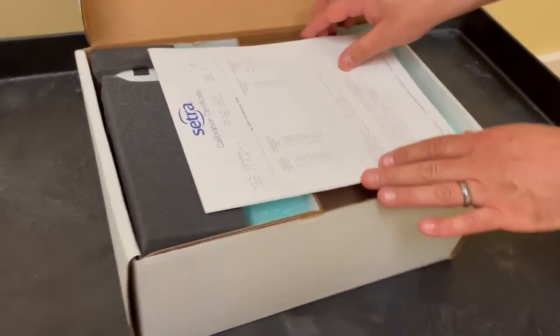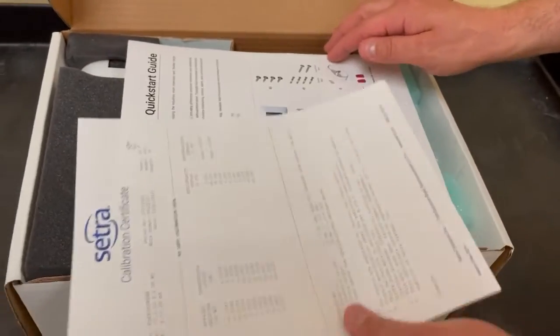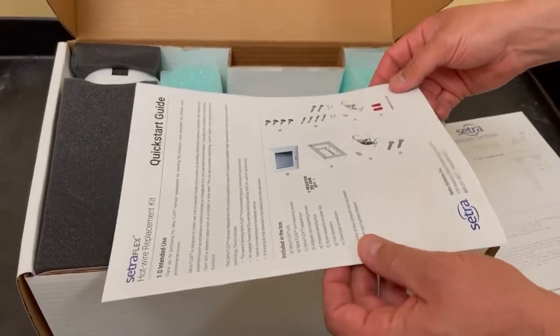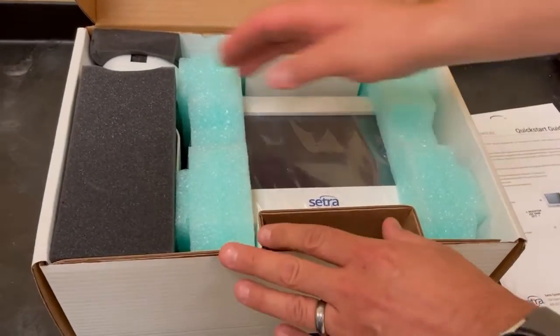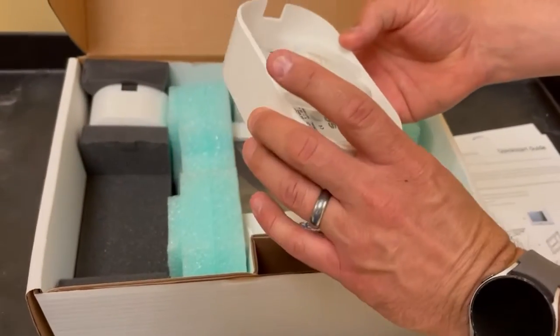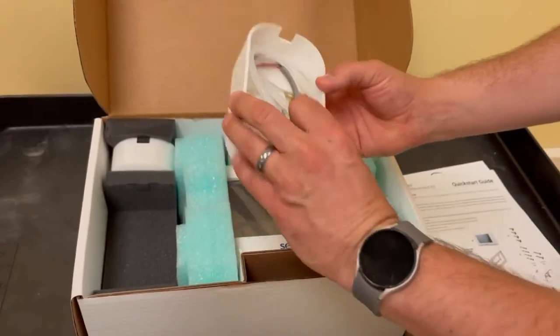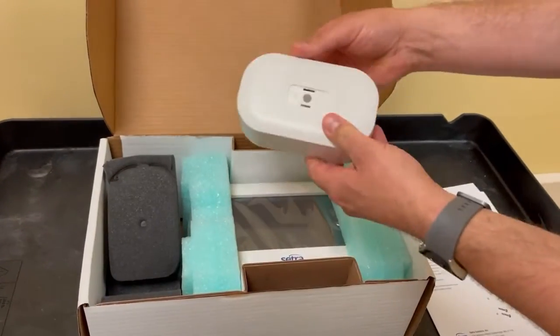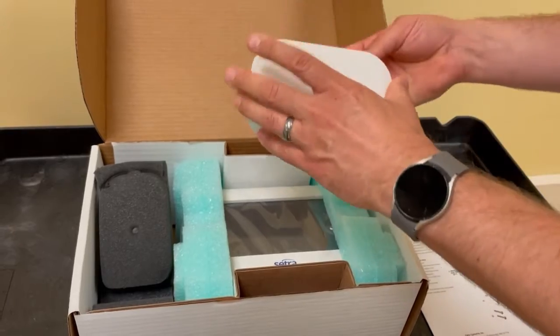You're going to have your calibration cert for this device which is NIST traceable. You're going to have a quick start guide with instructions. On the left side you have the cover that goes over the previous Pressurator location with a CETRA 265, and the cover that gets rid of the hole on the inside of the space.